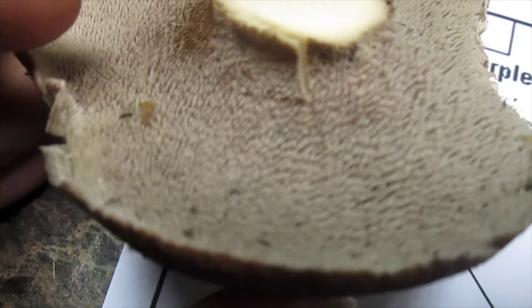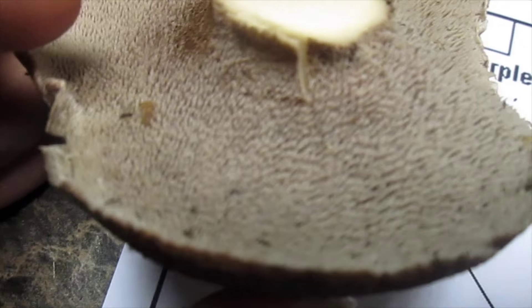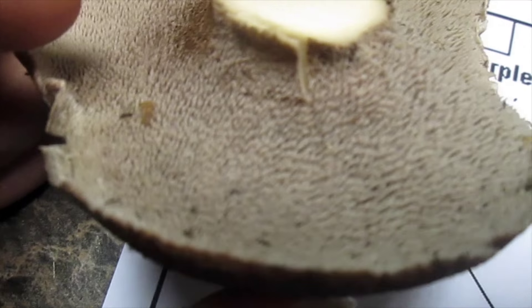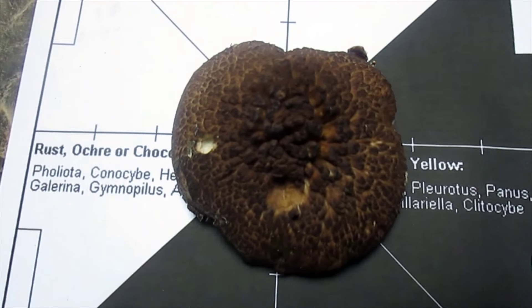You can see I cut the stem off here so I can get it pretty flat. You'll notice that this mushroom has teeth - little protuberances, I'll call them, little teeth that are coming out. Mushrooms usually have three things: they can be toothed, they can have pores, or they can have gills. That's three common things you can look at in some mushrooms to identify them.